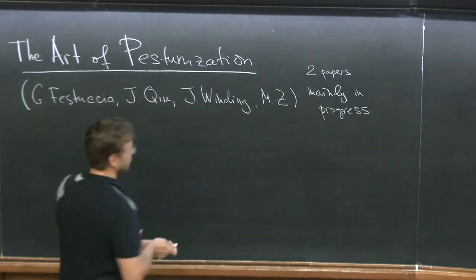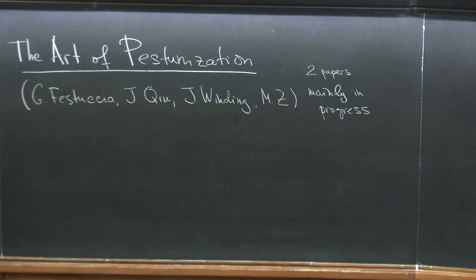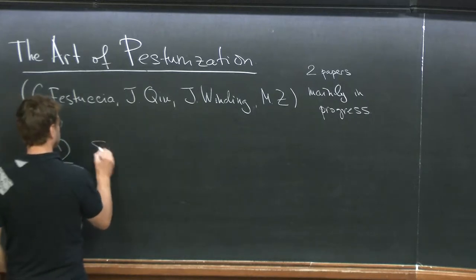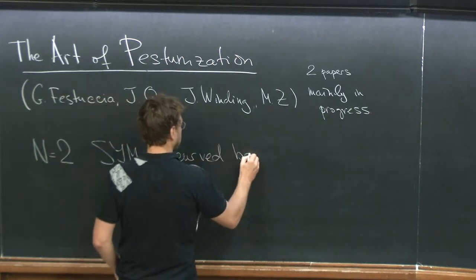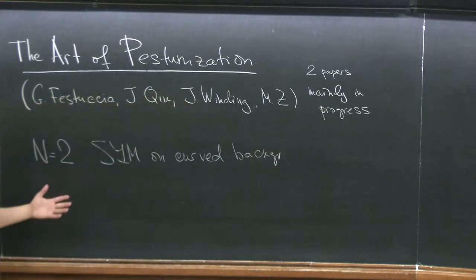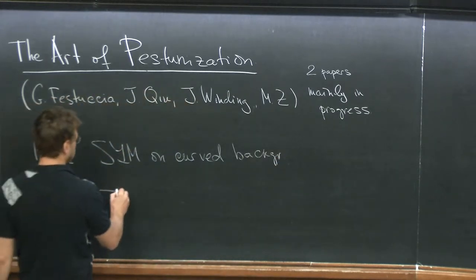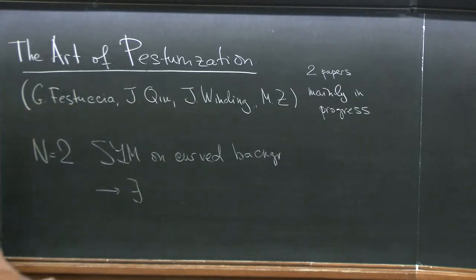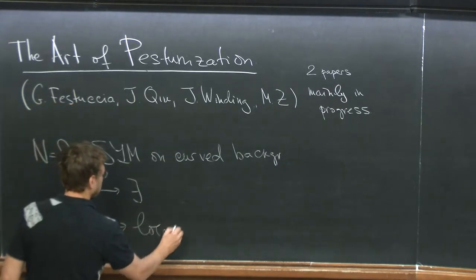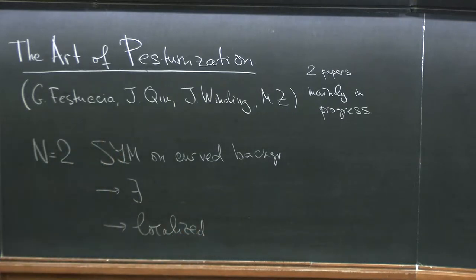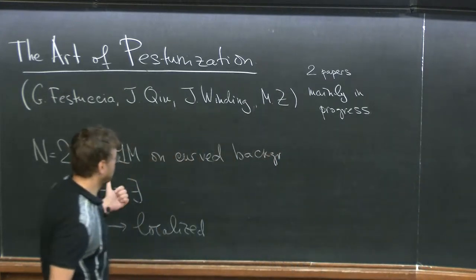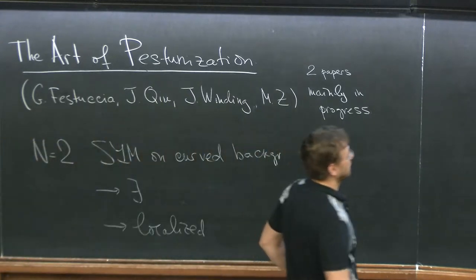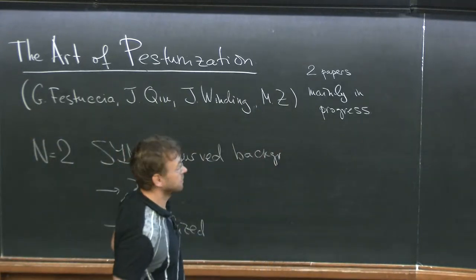Let me explain what's going on and what problem I'm going to address. I would like to look at N=2 supersymmetric Yang-Mills theories on curved backgrounds, and I would like to ask two questions. The first question is existence, and the second is when they can be localized — meaning writing the closed-form answer.